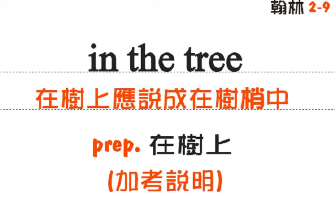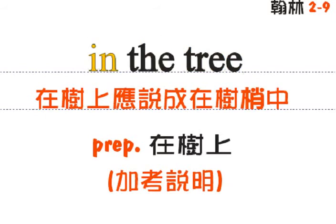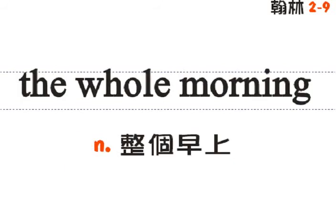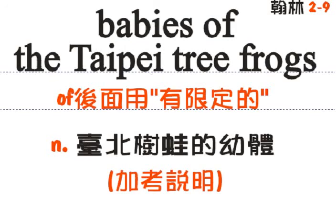那么我们中文讲在树上，可是你想想看，什么时候有东西是可以站在树的顶上面的？通常像鸟类那些栖息在树上的动物都是在树梢当中，所以英文是讲成in the tree，不管用什么限定的字眼。